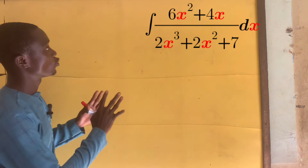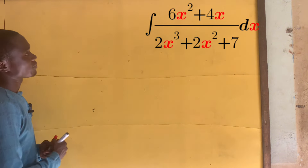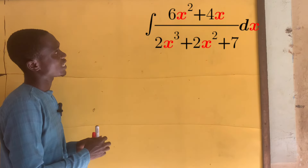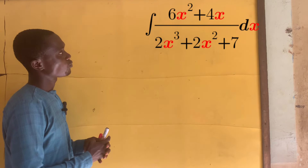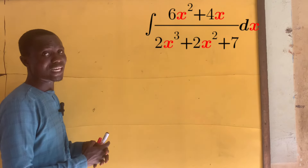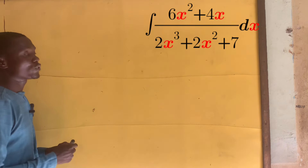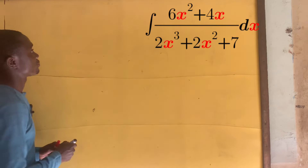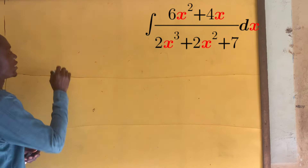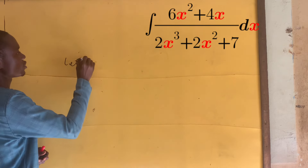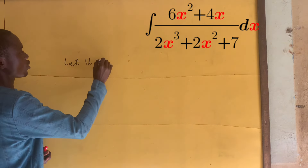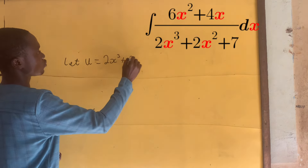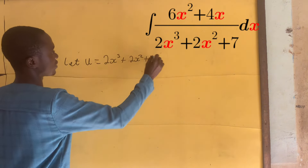To do this, should we use partial fractions or what can we do? We are going to use integration by substitution — that'll be very good. So if we let u equal 2x cubed plus 2x squared plus 7.